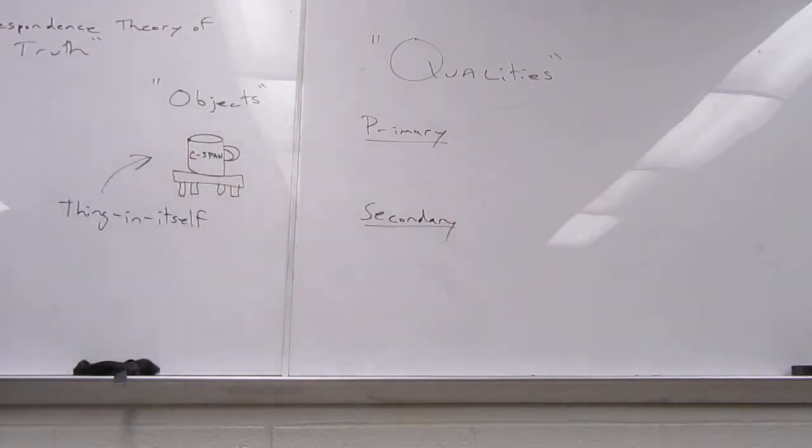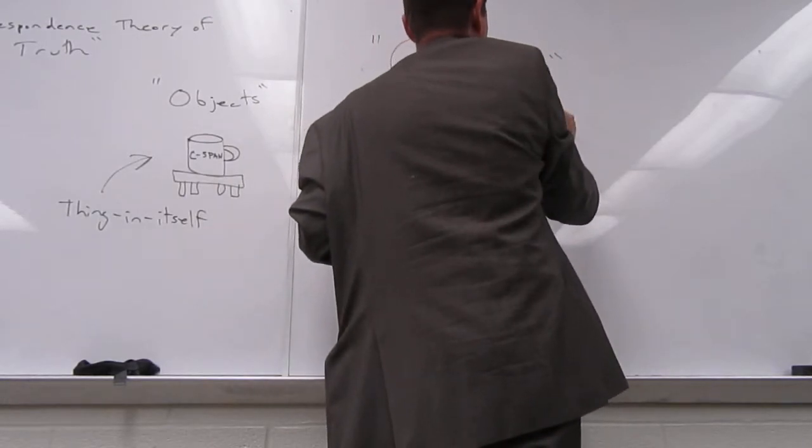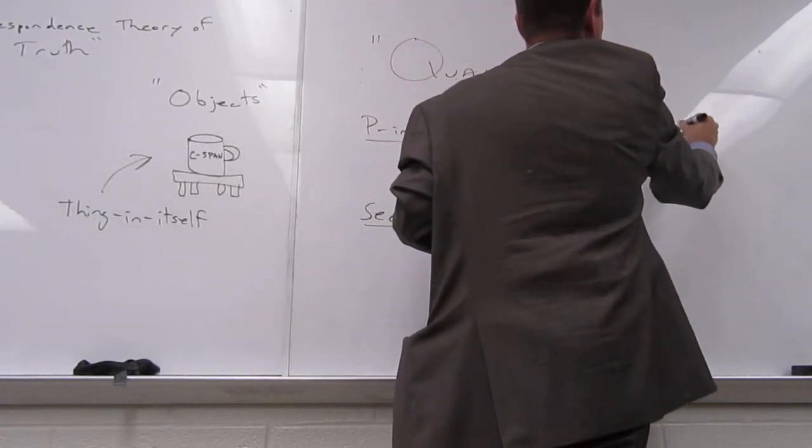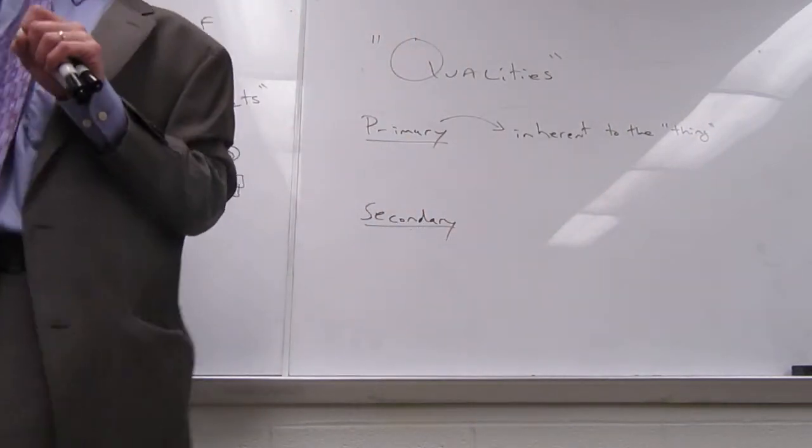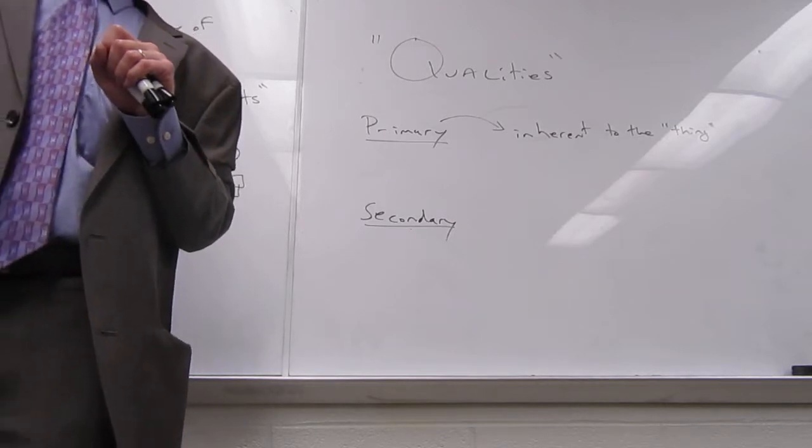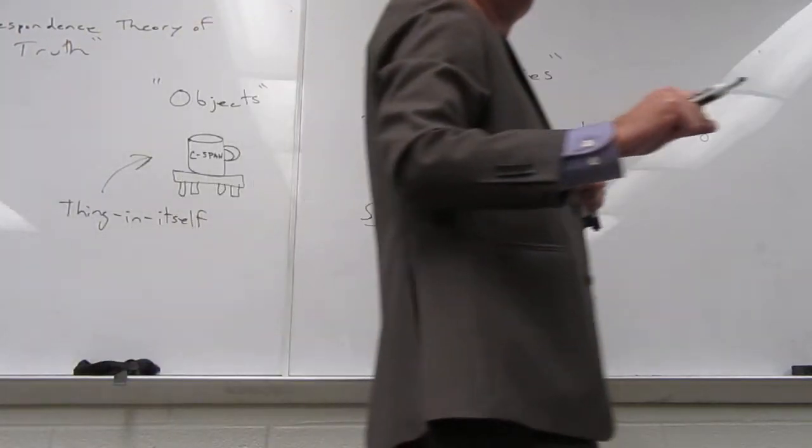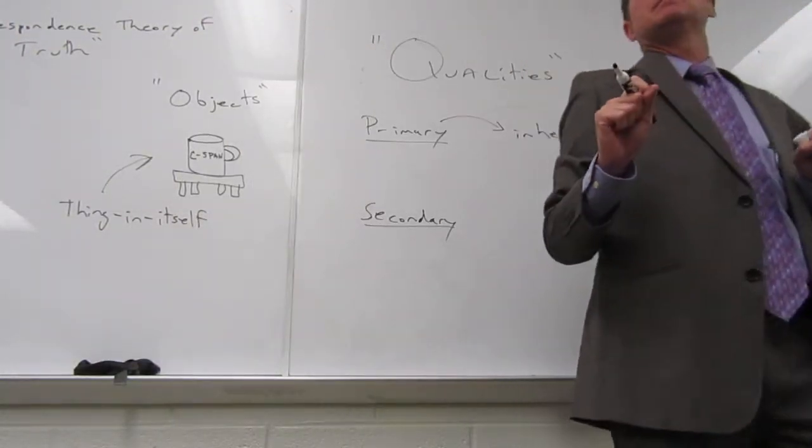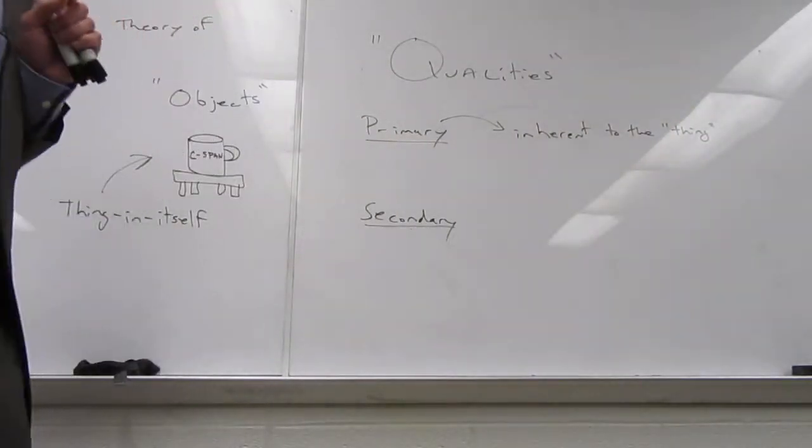Primary qualities refer to those characteristics of a thing that are what? Primary qualities are qualities that are inherent to the thing that we're perceiving. In other words, they are real, independent of what? Of my perception of it.